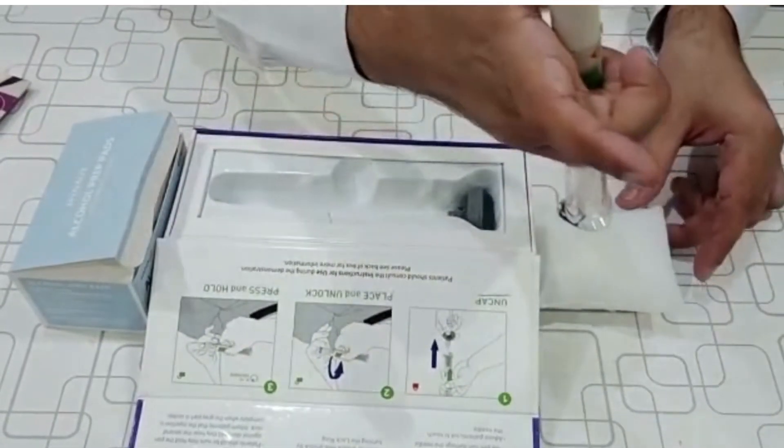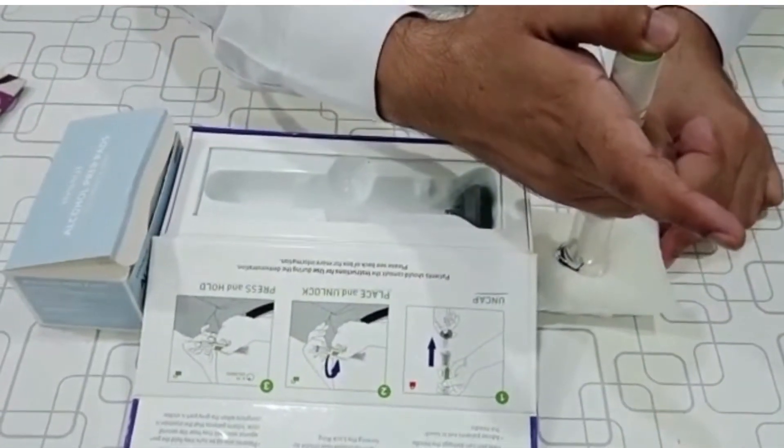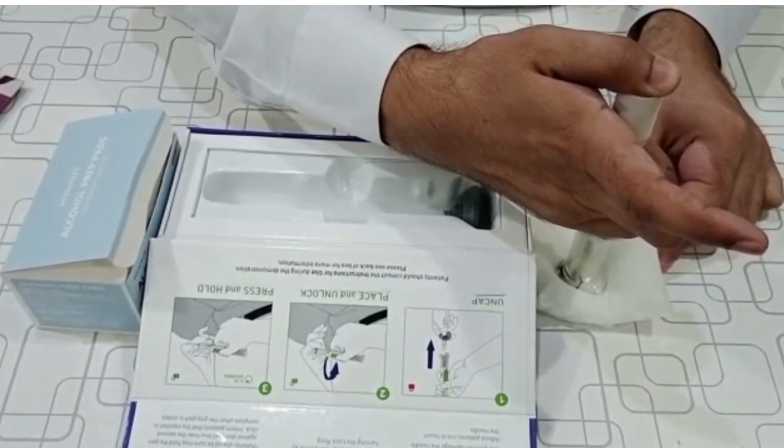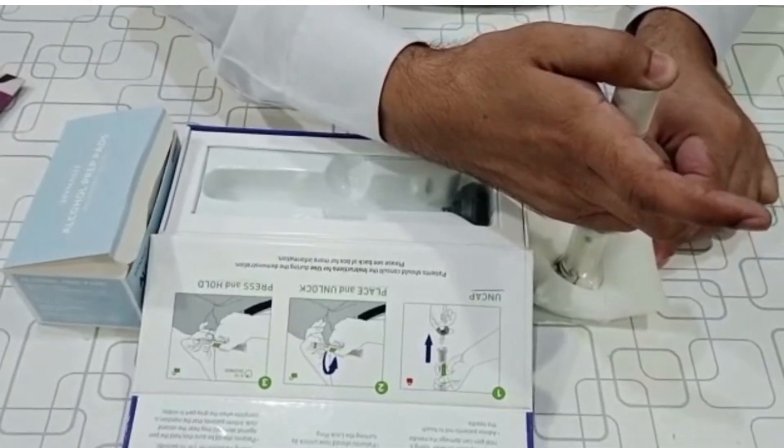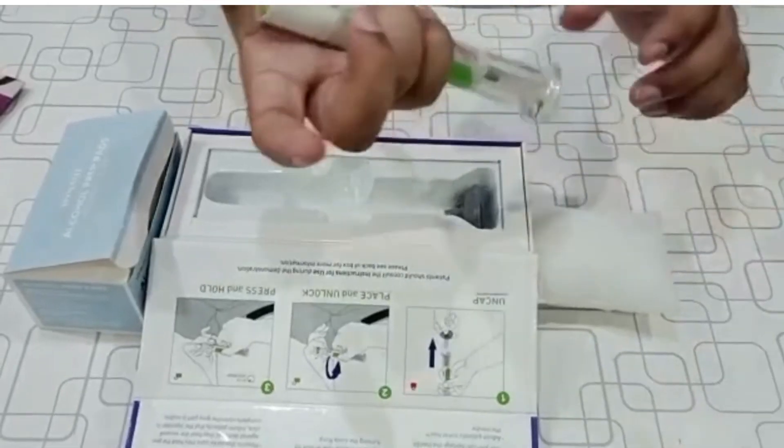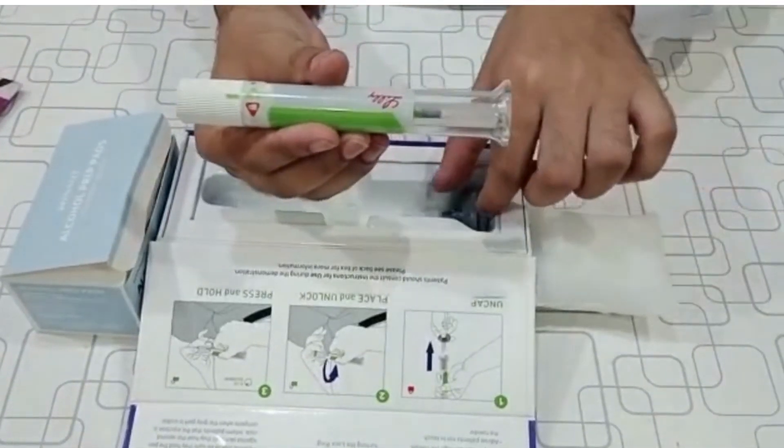When you are injecting the medication, first unlock the pen and then press the button. You will hear a click voice, then hold and wait for the next click. After a second click, the whole drug is delivered. Then put the cap on pen and discard it.